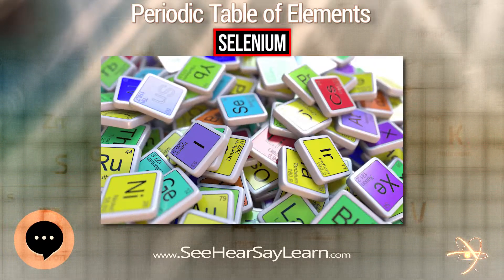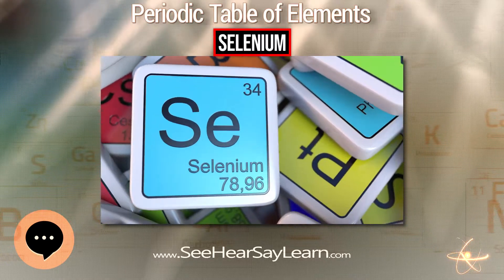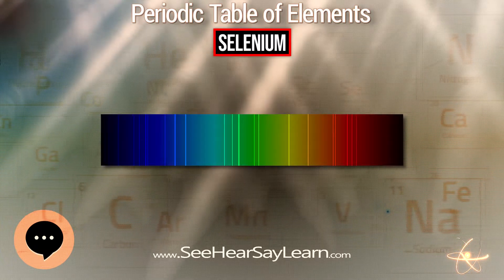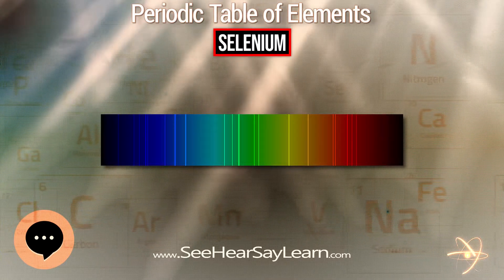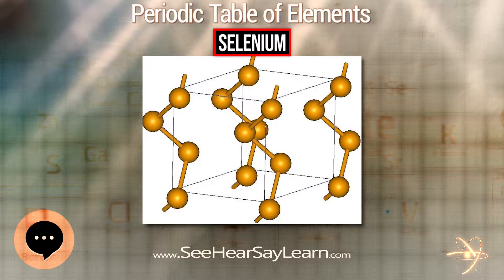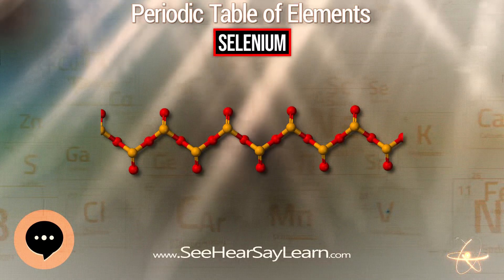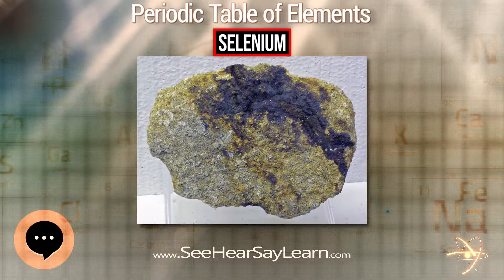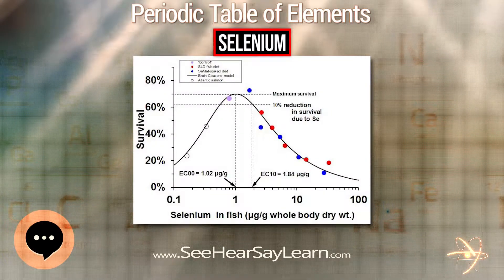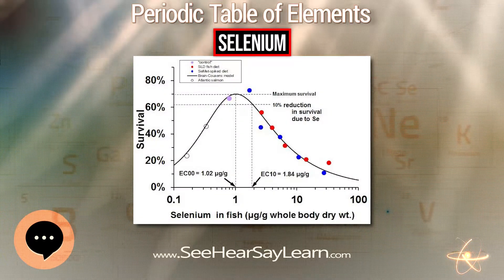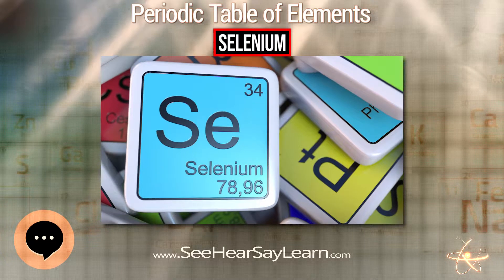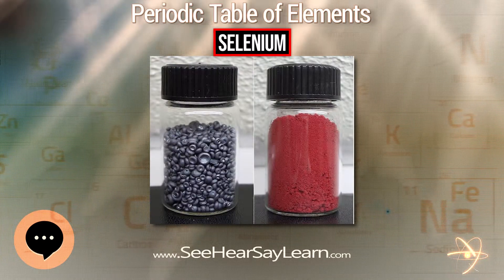Selenium forms two oxides: selenium dioxide and selenium trioxide. Selenium dioxide is formed by the reaction of elemental selenium with oxygen; it is a polymeric solid that forms monomeric SeO2 molecules in the gas phase. It dissolves in water to form selenious acid, H2SeO3. Selenious acid can also be made directly by oxidizing elemental selenium with nitric acid. Unlike sulfur, which forms a stable trioxide, selenium trioxide is thermodynamically unstable and decomposes to the dioxide above 185°C. Selenium trioxide is produced in the laboratory by the reaction of anhydrous potassium selenate and sulfur trioxide.